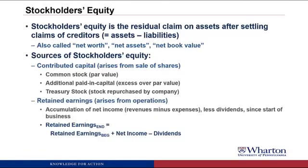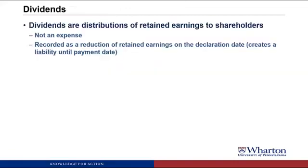The other source of stockholders' equity is retained earnings, which arise from operating the business. Retained earnings is the accumulation of net income — revenues minus expenses — less any dividends that have been paid out since the start of the business. Dividends are distributions of retained earnings to shareholders. They're not considered an expense, and we record them as a reduction of retained earnings on the date the board declares the dividend, called the declaration date. If we don't pay in cash on that date, it creates a liability to shareholders until we pay the dividend on the payment date.